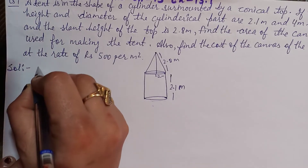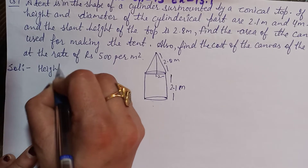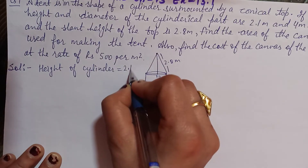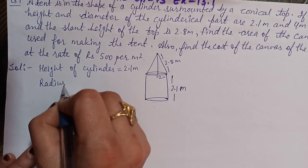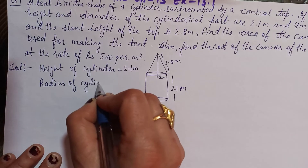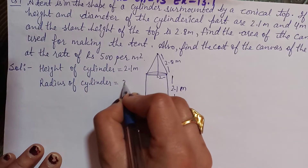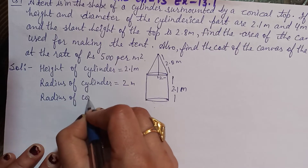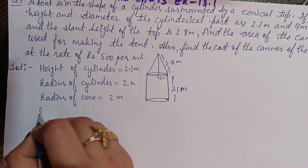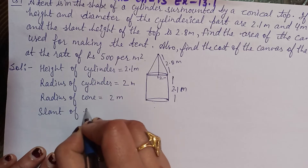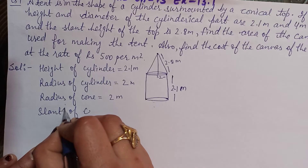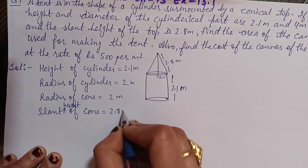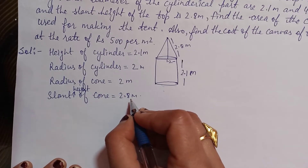First, write the given values. Height of the cylinder is 2.1 meter. Radius of cylinder — diameter was given as 4, so radius is 2 meter. Radius of cone is also 2 meter. Slant height of cone is 2.8 meter.